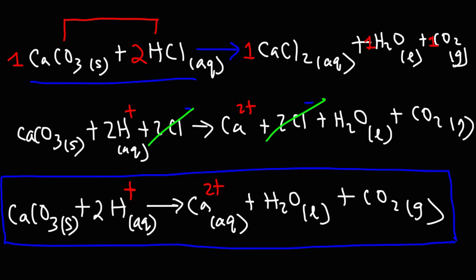And that's basically it for this video. Hopefully it helped you to see the process that you need to go through in order to write a net ionic equation. Step one, balance the molecular equation. Step two, write the total ionic equation by converting everything in the aqueous phase into ions. Step three, eliminate the spectator ions. And then what you have left over is the net ionic equation.